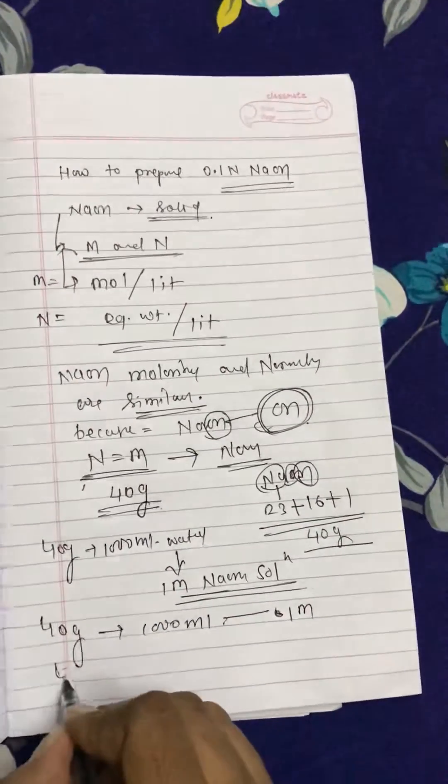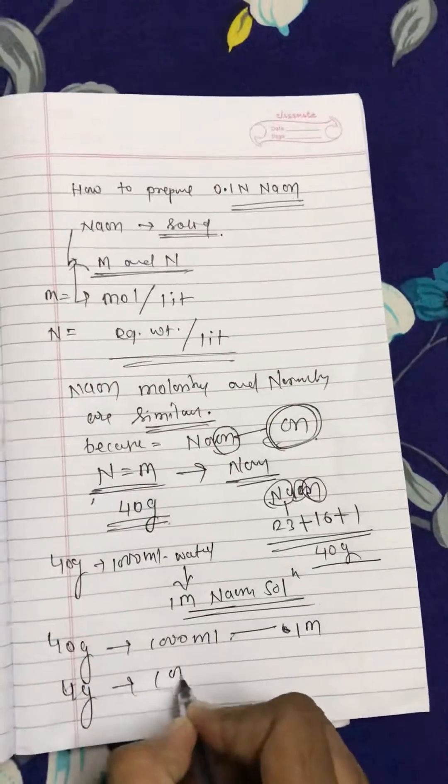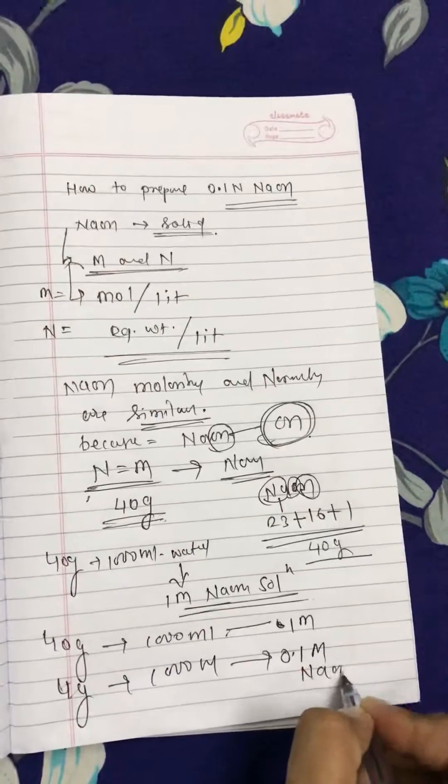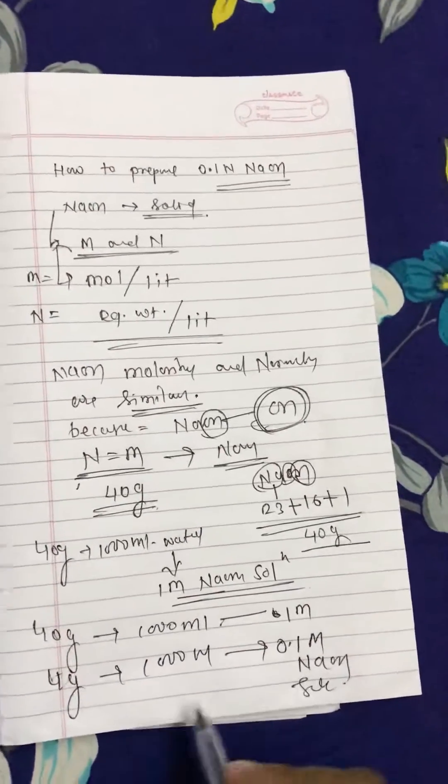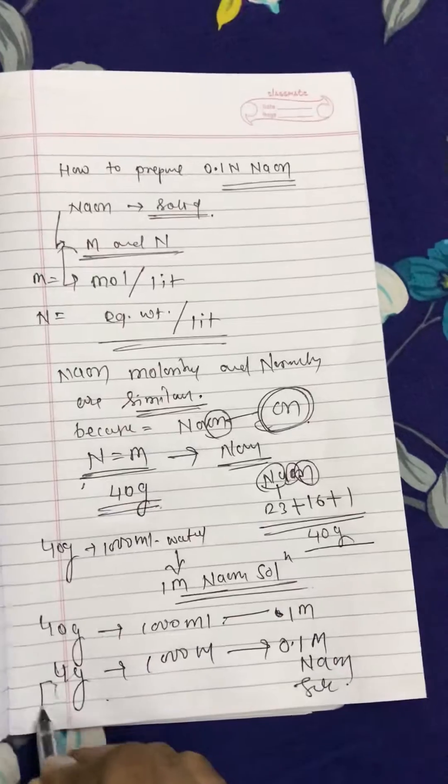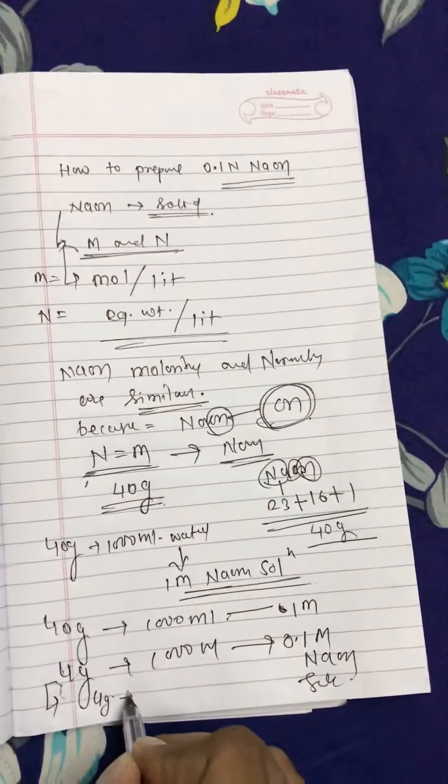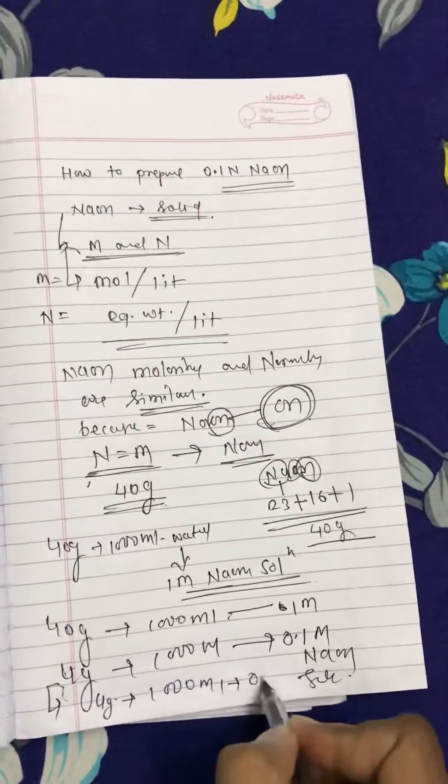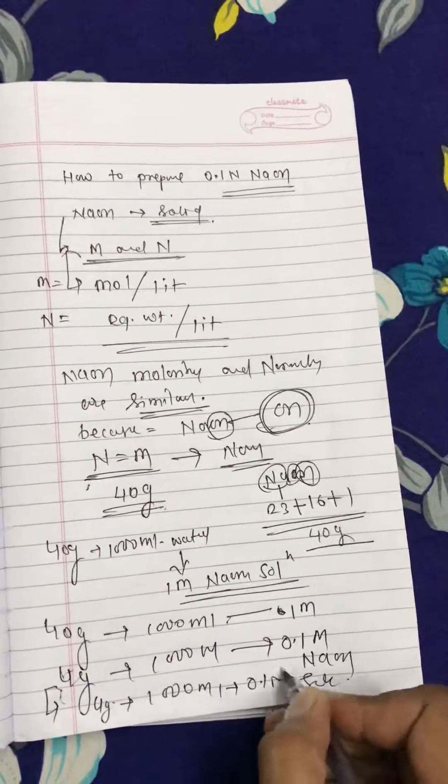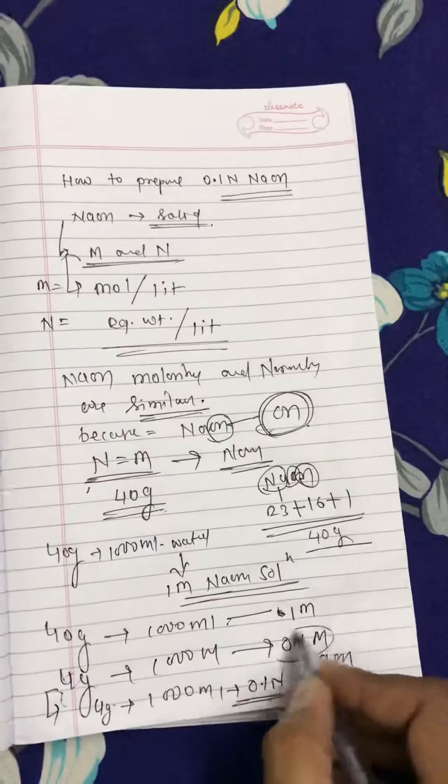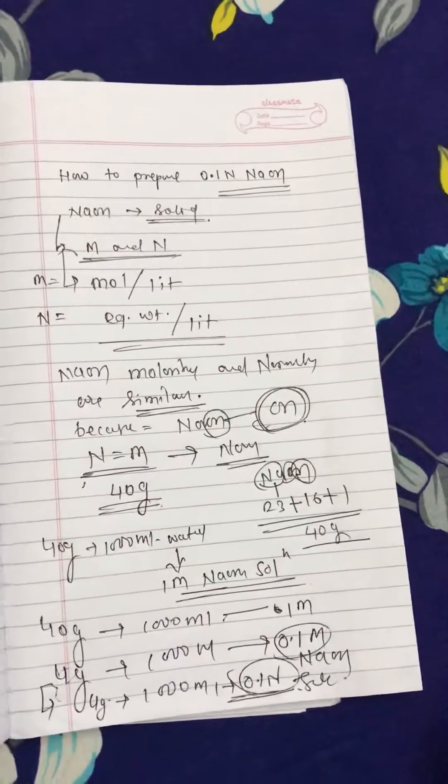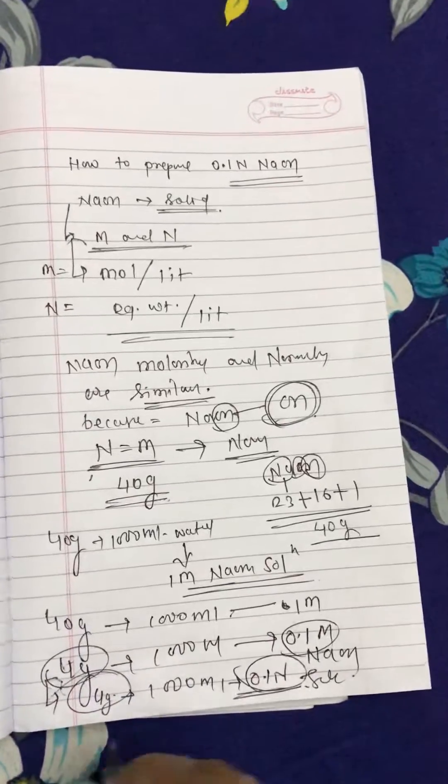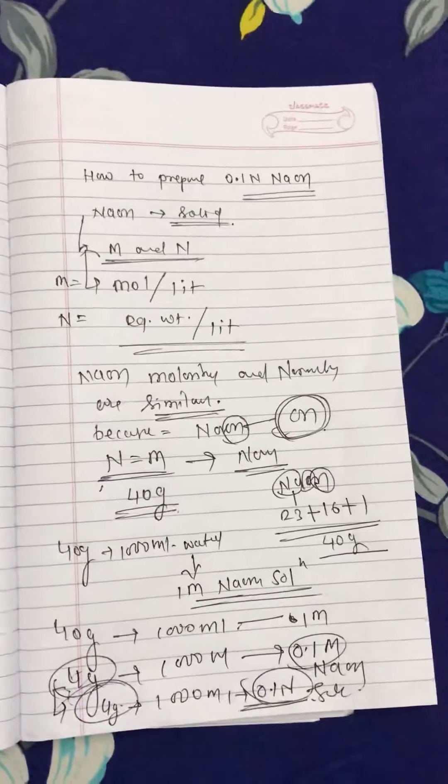4 grams in 1000 ml water makes 0.1 molar NaOH solution. Similarly for 0.1 normal, because normality and molarity are similar for NaOH solution. Thank you.